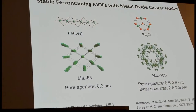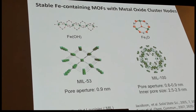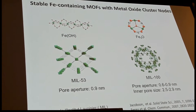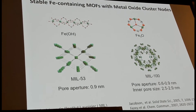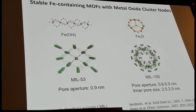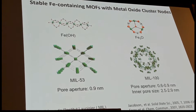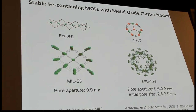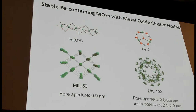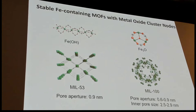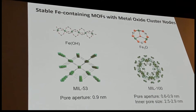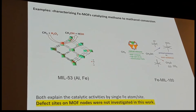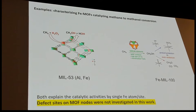Most MOFs are probably not very stable, but some are. For iron-based MOFs, MIL-53 and MIL-100 are the most stable. MIL-53 has an iron-OH node with pores around 0.9 nanometers. MIL-100 has an iron-3-oxide node, with each iron bound to six carboxylate groups and giant pores of about 3 nanometers. Both MOFs were developed by researchers in France, and there are already examples using these two MOFs to catalyze methane to methanol reactions — both are active.